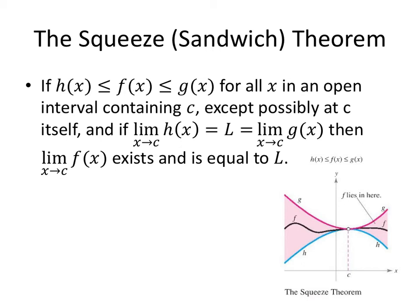All right, so the squeeze or sandwich theorem, I like to call it the sandwich theorem, but it's a squeeze theorem also. If we have three functions, H which is less than or equal to F, which is less than or equal to G, and they're in this order for all X in an open interval containing C, except for possibly at C itself. We don't know what's going on here, but H is down below, F is in the middle, G is up above. If both the limit as X approaches C of H of X equals L and the limit as X approaches C of G of X equals L, then it has to be that they squeeze F together and that limit is also L.